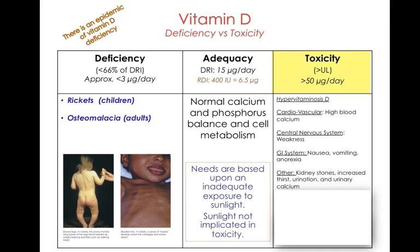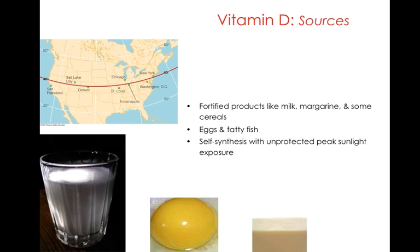Toxicity associated with vitamin D can affect the blood, the nervous system, and the gastrointestinal system. Toxicity is usually associated with supplements — sunlight is not implicated in vitamin D toxicity, though it can cause skin cancer. We get vitamin D from fortified products like milk, margarine, some cereals, eggs and fatty fish, and synthesis from the sun.